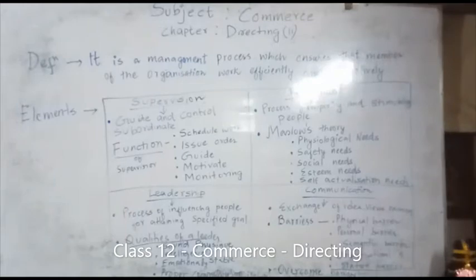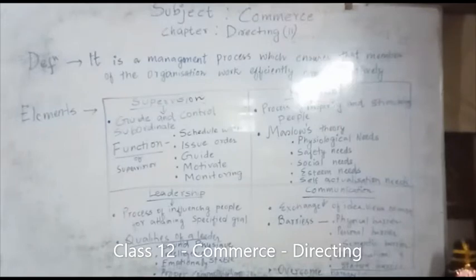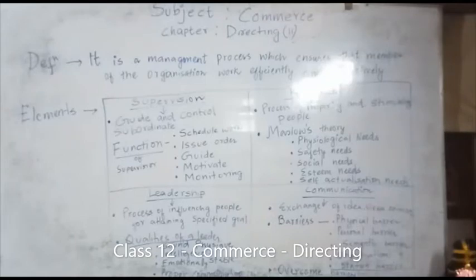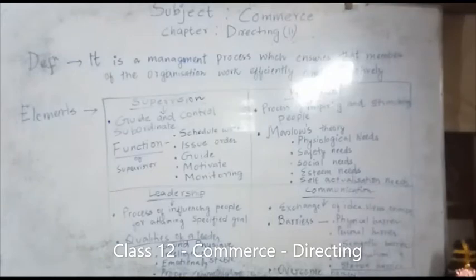Now if you go to the next part, that is the elements of directing, in the book you will find I made four boxes. The first box is Supervision, the second box is Motivation, the third box is Leadership, and the fourth box is Communication. So there are four elements of directing: Supervision, Motivation, Leadership, and Communication. Now we have to go into details of these four elements.